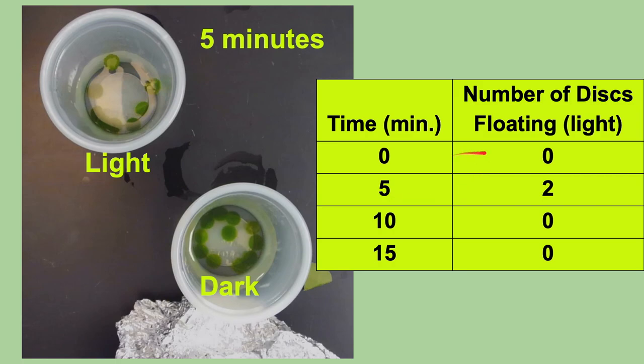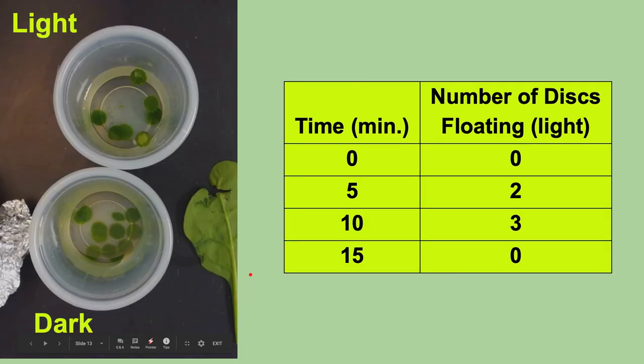So after, for example, zero minutes, no one's floating. After five minutes, we are going to record that two disks are floating. We can count them - one, two are floating that were exposed to the light. And we uncover the one in the dark and we peek in and we see no one's floating. So cover it back up, put it back to the light source, wait another five minutes.